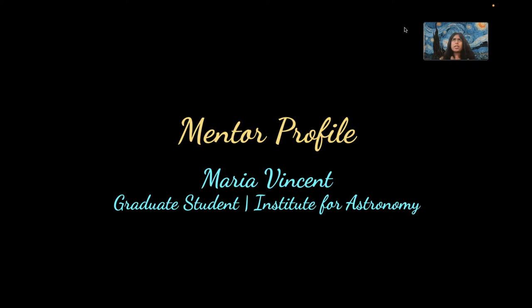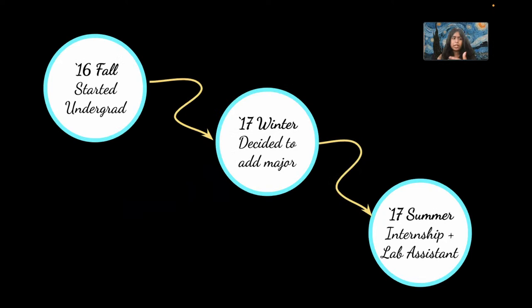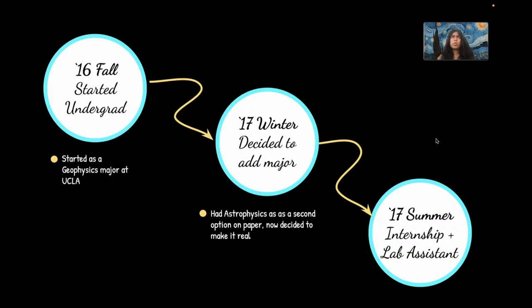I can talk about what steps you probably have to take at various points — whether you're a first-year undergrad or a senior. I started my undergrad in fall 2016 as a geophysics major at UCLA. In January 2017 I decided to add a second major. I always considered astrophysics, but wasn't sure until I learned about planetary science — the subsection of astronomy covering solid bodies, their processes, physics, and chemistry. It is a field of its own but falls well within astronomy.